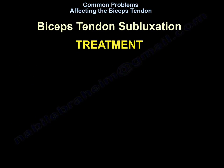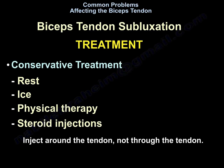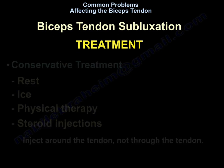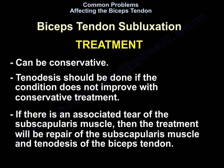Treatment of biceps tendon subluxation: conservative treatment with rest, ice, physiotherapy, and steroid injection around — not through — the tendon. If the condition does not improve with conservative treatment, tenodesis of the biceps tendon should be performed. If there is an associated tear of the subscapularis muscle, the treatment will be repair of the subscapularis muscle and tenodesis of the biceps tendon.